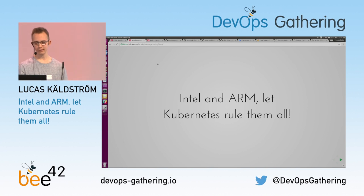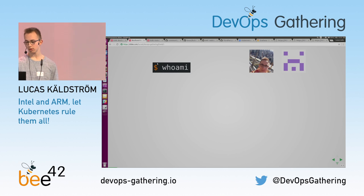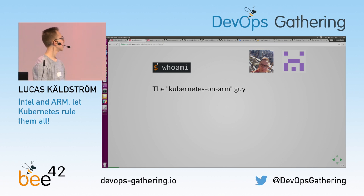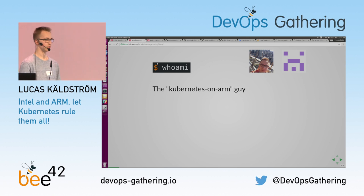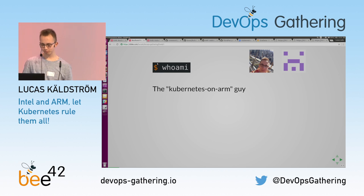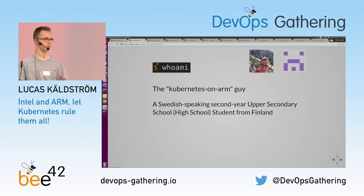I'm Lukas Kjellström from Finland, as Dieter said. I'm a normal upper secondary school student in a small town of about 20,000 people. Some of you may know me as the Kubernetes on ARM guy. That was my GitHub profile earlier, and after KubeCon Seattle I photographed myself at Space Needle and thought it could be a good profile picture. I'm a second year upper secondary school student — high school for those from the U.S. — and I speak Swedish, although I live in Finland.